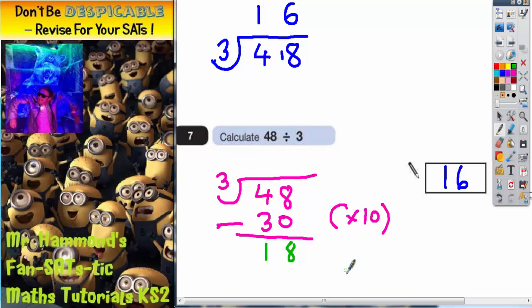So another chunk of 3 that we can subtract. At this point, if you know your times tables, you should know that 6 3's make 18. So if I take 6 lots of 3 off, 6 lots of 3 is 18.